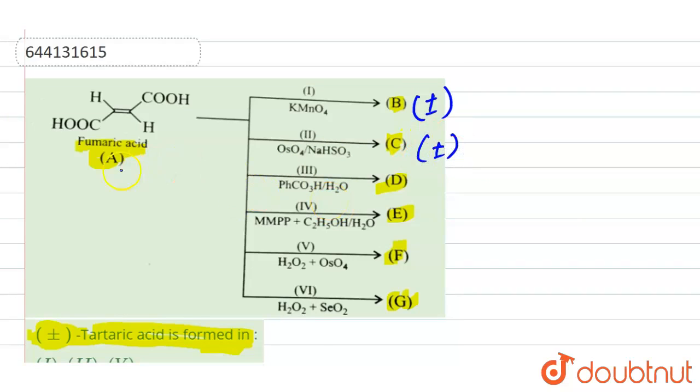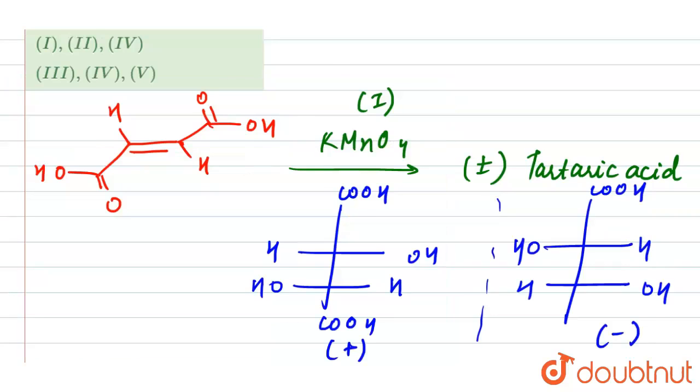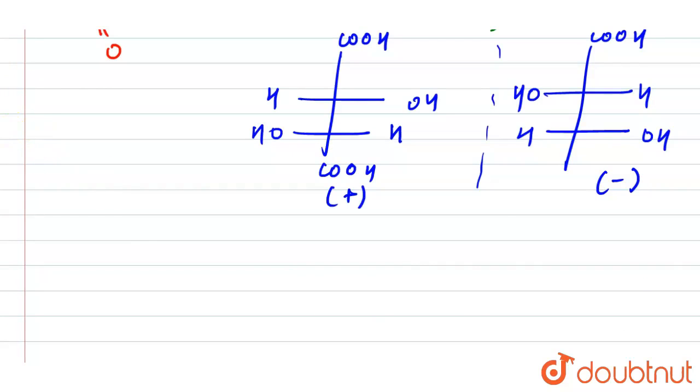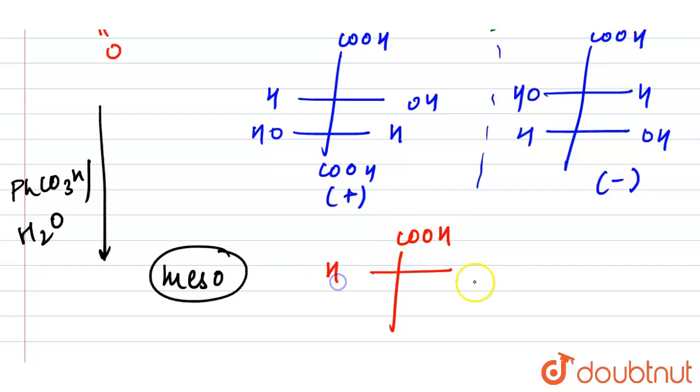Next is PhCO3H by H2O. In the third case, that is PhCO3H by H2O, in this we have the formation of the meso compound, that is meso-tartaric acid. For that we have the representation like this: COOH. And why this will be meso? Because here we can pass the plane of symmetry. We can pass the plane of symmetry. Both OH groups are on same side and H on the same side in the representation.